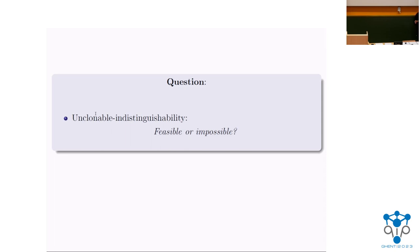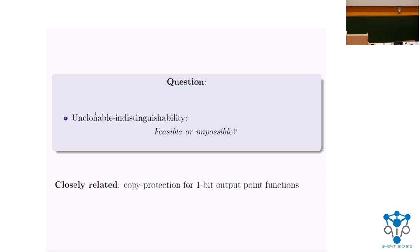Indistinguishability is clearly harder to achieve than search security. An important open question from past works is whether it's even possible to achieve Unclonable Indistinguishability. Proving a positive or negative result here would be very interesting. Even if you don't care about Unclonable Indistinguishability, answering this question has implications for understanding the feasibility of copy protection for point functions, since techniques for proving existence or impossibility of Unclonable Indistinguishability can correspondingly yield results on copy protection.